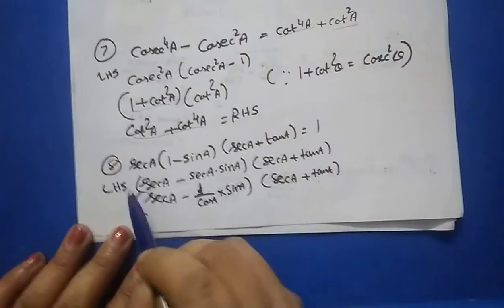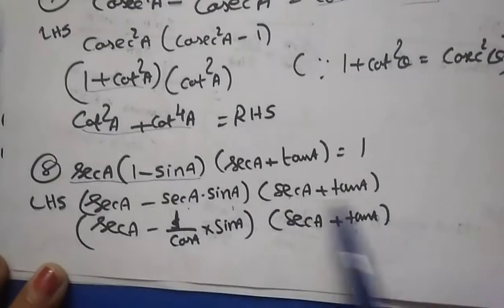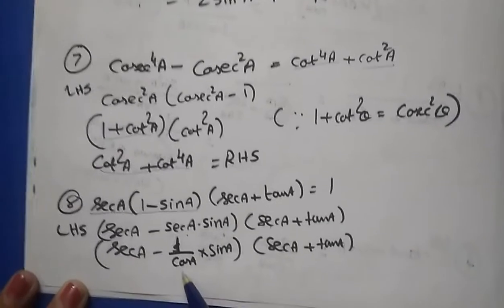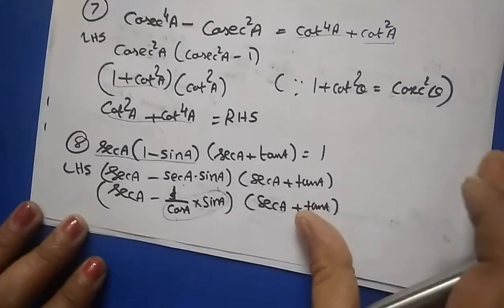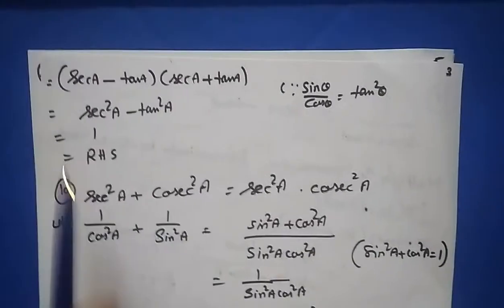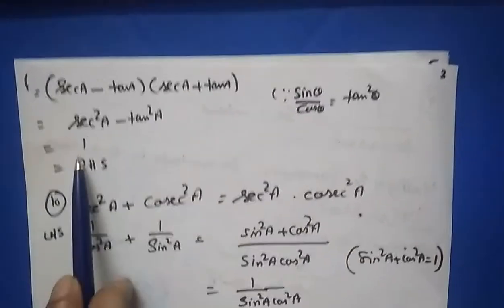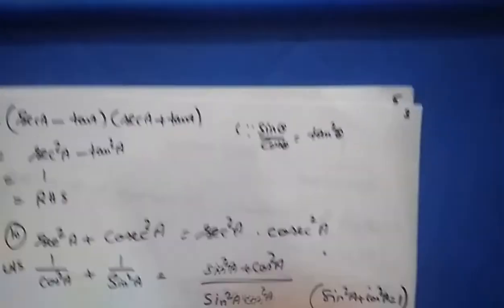Question eight: sec a·(1 − sin a)·(sec a + tan a) = 1. Multiply out the first part: (sec a − sec a·sin a)·(sec a + tan a). Replace sec a with 1/cos a; since sin a/cos a = tan a, you get (sec a − tan a)·(sec a + tan a). This is a² − b² form: sec²a − tan²a. Since sec²a − tan²a = 1, that equals the right hand side.